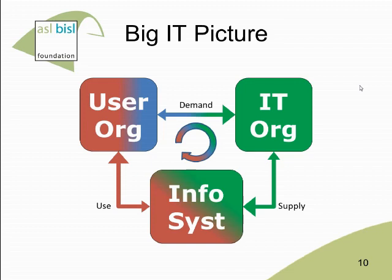The top relationship — the demand relationship between the user organization and IT — is often a troubled one. IT people often talk techno-babble that business people can't understand, and some IT people think that business people don't know what they want and are always changing their minds. That's possibly why we have spent so much time on the topic of business and IT alignment, which is still a hot topic and a quite difficult area.